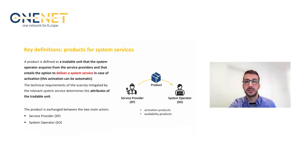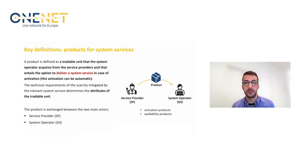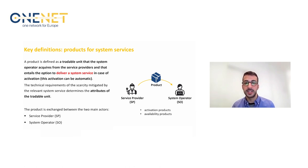The second key definition concerns the products for system services. A product is defined as the tradable unit that the system operators acquire from the system service providers, and that entails the option to deliver a system service in case of activation. The activation can be automatic. The technical requirements of the scarcity determine the attributes of the product. The product is exchanged between two main actors — the service provider and the system operators. To generalize, we may consider two categories of products: the activation products and the availability products. Activation products refer to services activated in response to certain conditions in the power system, while availability products refer to the commodity that ensures the availability of activating the services when needed.